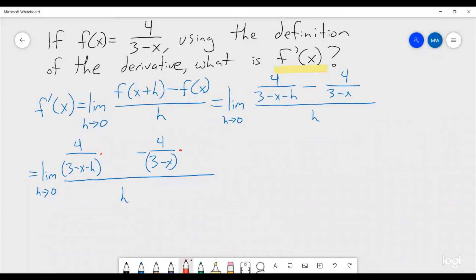So, 3 minus x minus h, that fraction we're going to multiply the top and bottom by 3 minus x. And then the other one, we're going to multiply the top and bottom by 3 minus x minus h.